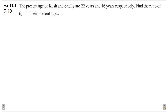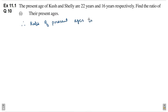The present age of Cush and Shelley are 22 years and 16 years respectively. Find the ratio of their present ages. So, present ages given here are 22 years and 16 years. Therefore, ratio of present ages is 22 is to 16.